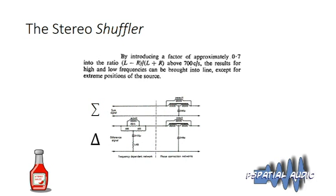The original shuffler circuit is shown here — the left-hand part being the frequency-dependent filter network. They then had to matrix the signals back to left and right again, requiring phase compensation, shown in the right-hand part of the circuit. That phase compensation was the part that caused problems later and eventually caused the shuffler to fall into disgrace and ignominy.